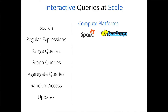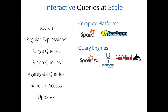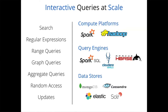To cater to all these different operations, we've come up with a variety of increasingly complex systems. We've built compute platforms like Spark and Hadoop which enable arbitrary computations on huge volumes of data. We've also built query engines on top of these platforms such as Spark SQL, Cloudera's Impala, and HBase. Finally, we have data stores: on one hand, document stores like MongoDB and Cassandra for low-latency read/write operations; on the other, search-based stores like Elasticsearch and Solr for search and regular expression operations.